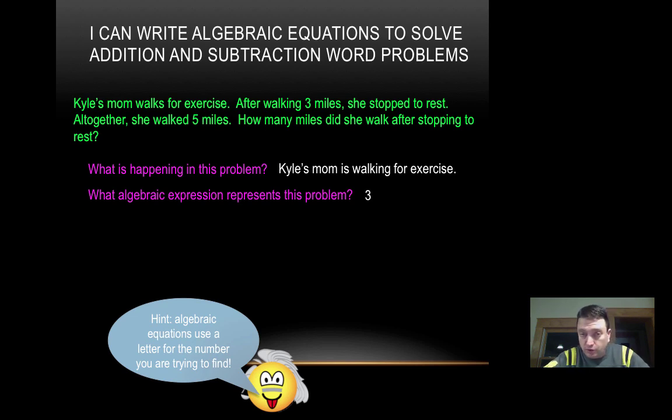So we know that she walked three miles, and then she rested, and after that she walked some more miles. And I like to use the same letter as the unit in my word problem, because it helps me answer my question with the correct unit later. So I used M for miles in this case. And we know that after she was all done, her total was five miles.